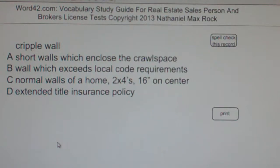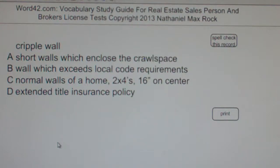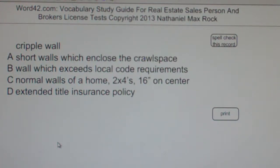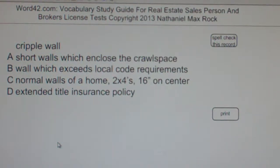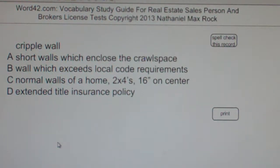Multiple choice question. Cripple wall. A: short walls which enclose the crawl space. B: wall which exceeds local code requirements. C: normal walls of a home, two by fours, sixteen inches on center. D: extended title insurance policy. The correct answer choice for cripple wall in this case is A: short walls which enclose the crawl space.